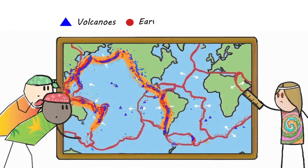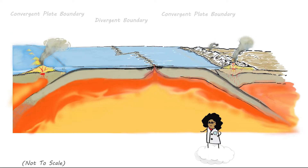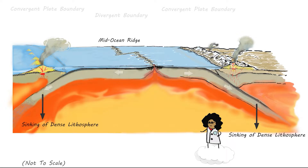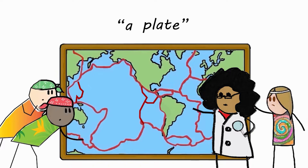It didn't take long after the seafloor spreading idea was accepted for scientists to figure out that the Earth is not expanding. Instead, old seafloor is being destroyed by sinking in Pacific trenches at the same rate that new seafloor is produced by seafloor spreading. A few more details were added by the time the modern theory of plate tectonics was clear and widely accepted by 1970, including how the moving fragments of lithosphere are the tectonic plates.